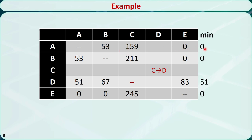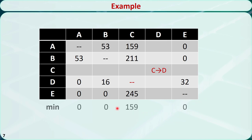Find the minimum value for each row — that's 0, 0, 51, and 0. Subtract the minimum value from each row. This is what we have now. Find the minimum value for each column — that's 0, 0, 159, and 0. Subtract the minimum value from each column. This is what we get.